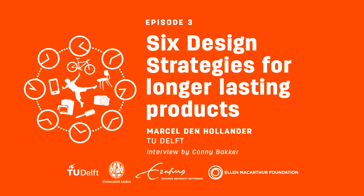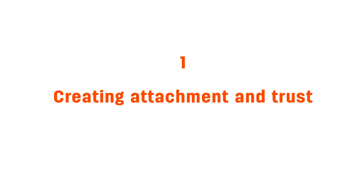You have identified six strategies for longer lasting products. The first strategy is creating attachment and trust. That's one of the most important strategies, but it's also one of the most difficult to design for, because it's very hard to design a product of which you beforehand know that people will get attached to it, or will like it, or will love it — because that's the essence of product attachment. But if it works, it can really mean that the user will hold on to a product for a longer time.